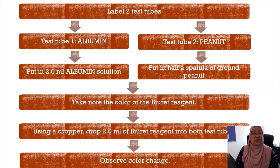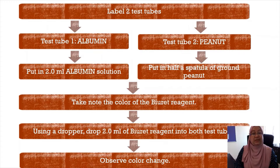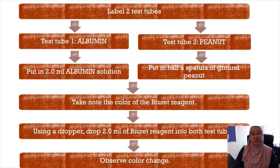This procedure is carried out to determine the presence of protein. Label two test tubes: test tube one for albumin, test tube two for peanut. In test tube one, put in 2 ml of albumin solution; in test tube two, put in half a spatula of ground peanut. Take note of the color of the biuret reagent, then using a dropper, add 2 ml of biuret reagent into both test tubes and observe any color changes.